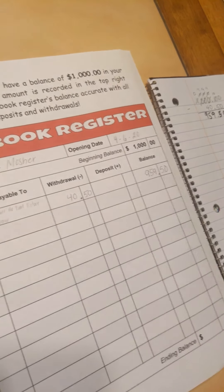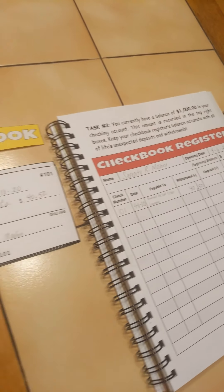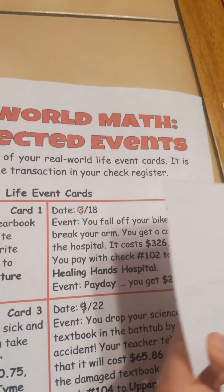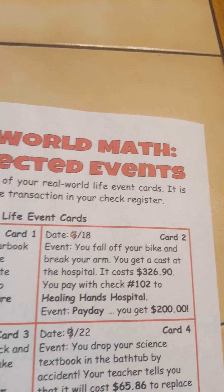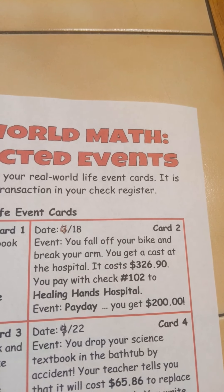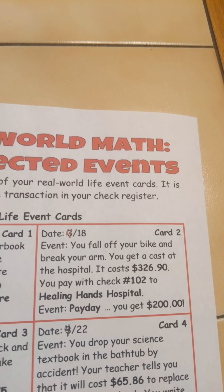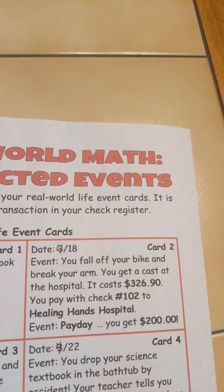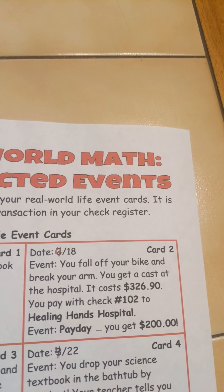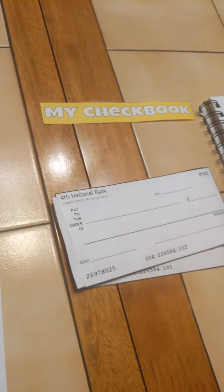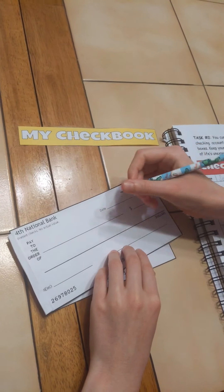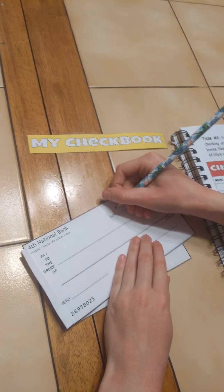Are you ready for your next life event? We're going to fast forward. April 18th — you fall off your bike and break your arm. You get a cast at the hospital. It costs $326.90. You pay with check number 102 to Healing Hands Hospital. With her broken arm, she's going to have to make out her check.